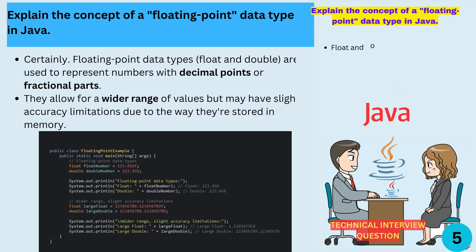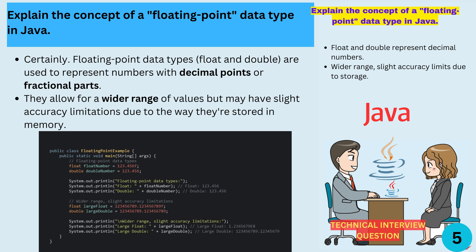Explain the concept of a floating point data type in Java. Certainly. Floating point data types, float and double, are used to represent numbers with decimal points or fractional parts. They allow for a wider range of values but may have slight accuracy limitations due to the way they're stored in memory.